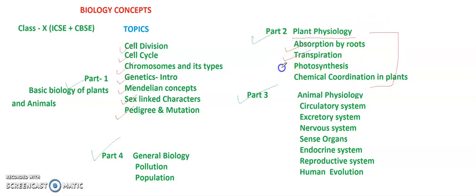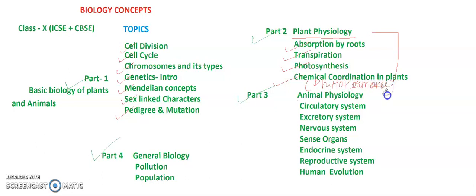Part 2 covers laws of photosynthesis, chemical coordination in plants, and in this part we will also learn about phytohormones — what are plant hormones, what are tropic movements, and what are nastic movements.